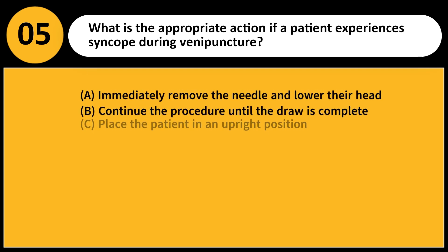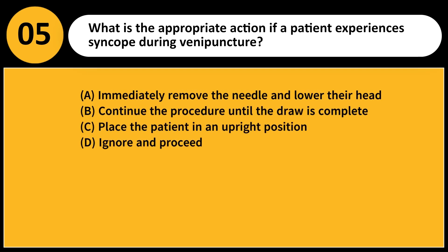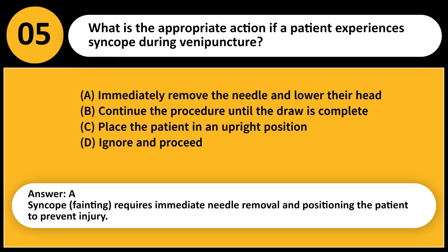What is the appropriate action if a patient experiences syncope during venipuncture? A. Immediately remove the needle and lower their head. B. Continue the procedure until the draw is complete. C. Place the patient in an upright position. D. Ignore and proceed. Answer: A. Syncope (fainting) requires immediate needle removal and positioning the patient to prevent injury.